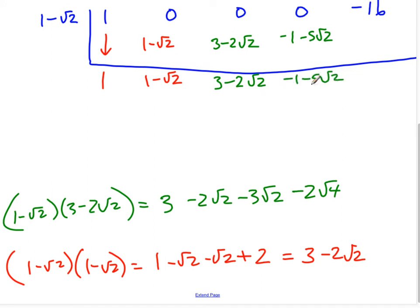Now I get to foil again. This one and that one. More negatives. So 1 minus root 2 times negative 1 minus 5 root 2. So when I foil that, it's going to be a negative 1 minus 5 root 2. That'll be plus root 2, and then plus